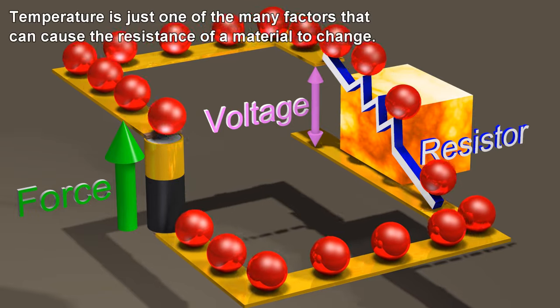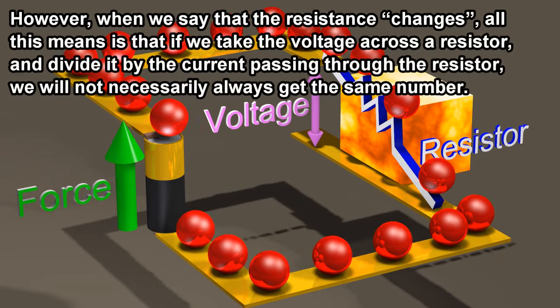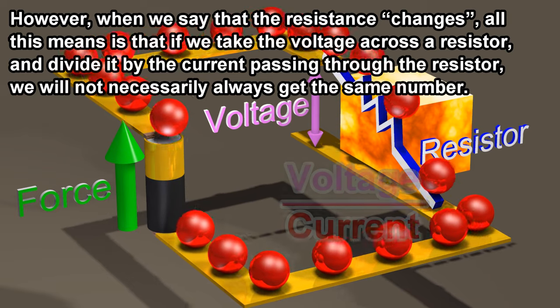Temperature is just one of the many factors that can cause the resistance of a material to change. However, when we say that the resistance changes, all this means is that if we take the voltage across a resistor and divide it by the current passing through the resistor, we will not necessarily always get the same number.